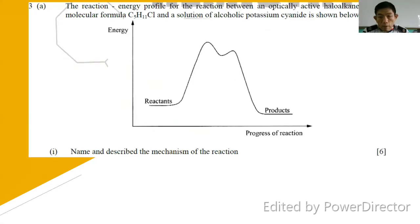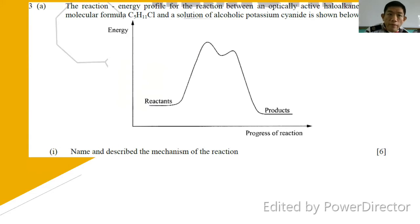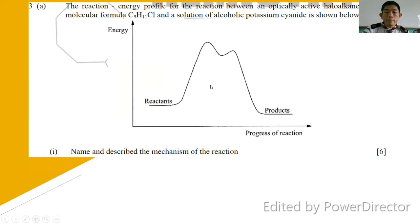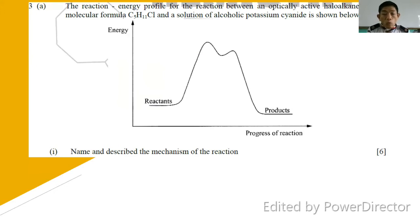Continuing with question number three: the reaction energy profile for the reaction between an optically active haloalkane X with molecular formula C5H11Cl and alcoholic potassium cyanide is shown. The energy profile has two loops, which indicates that this reaction has two steps. A reaction with two steps is definitely SN1.